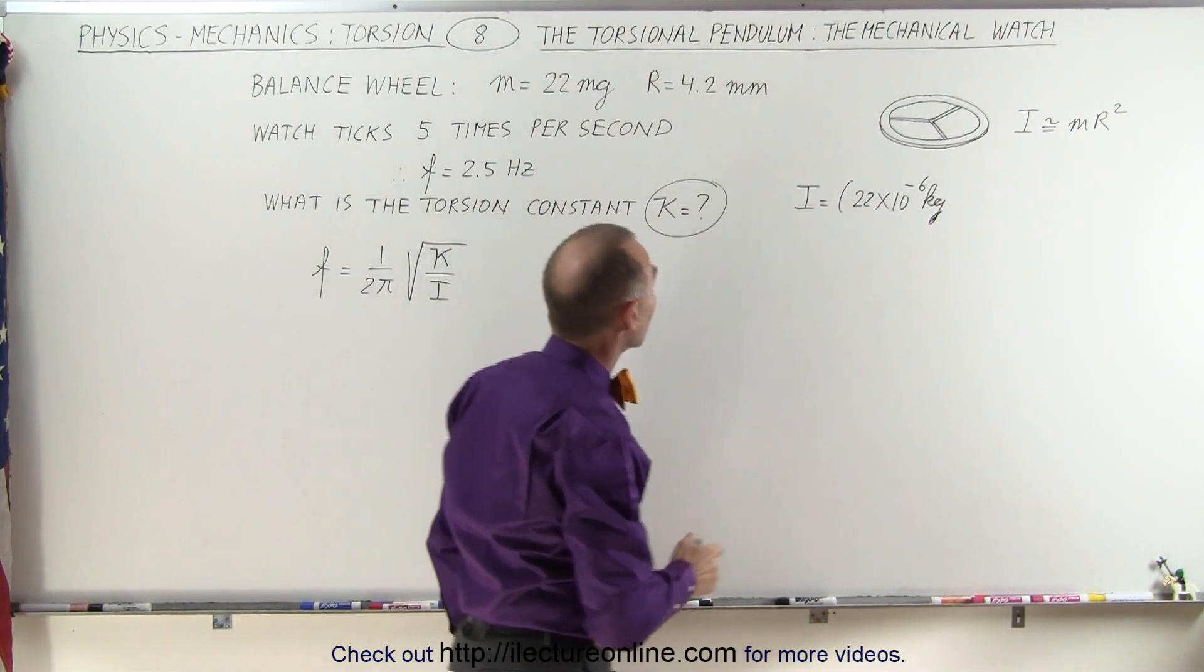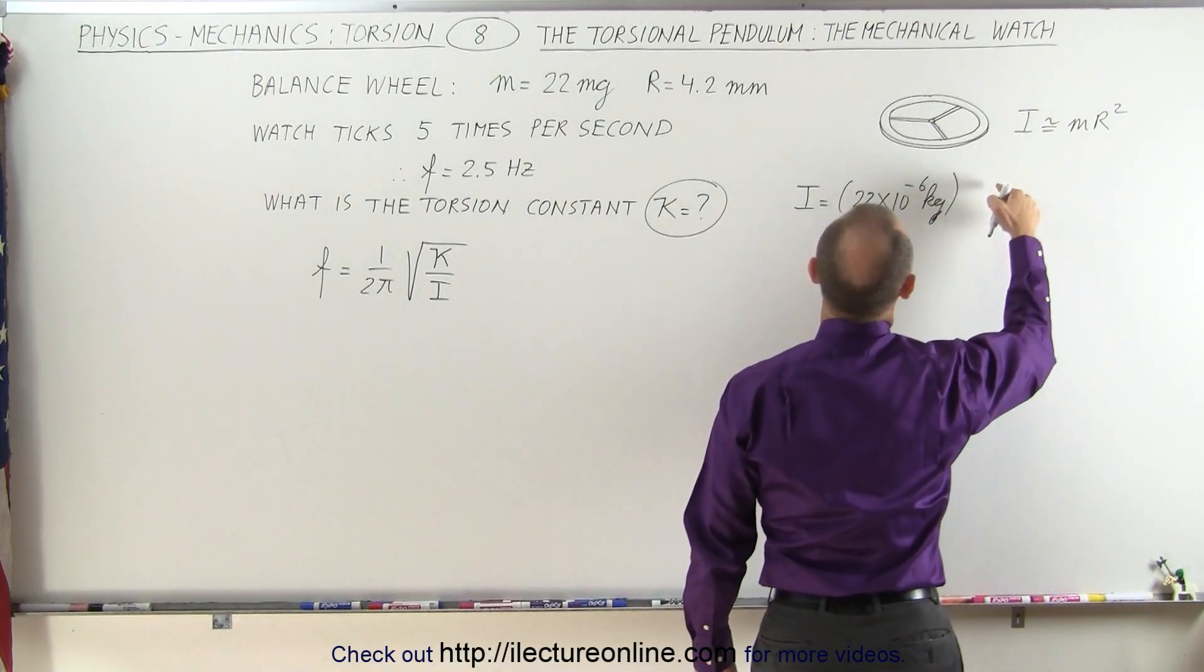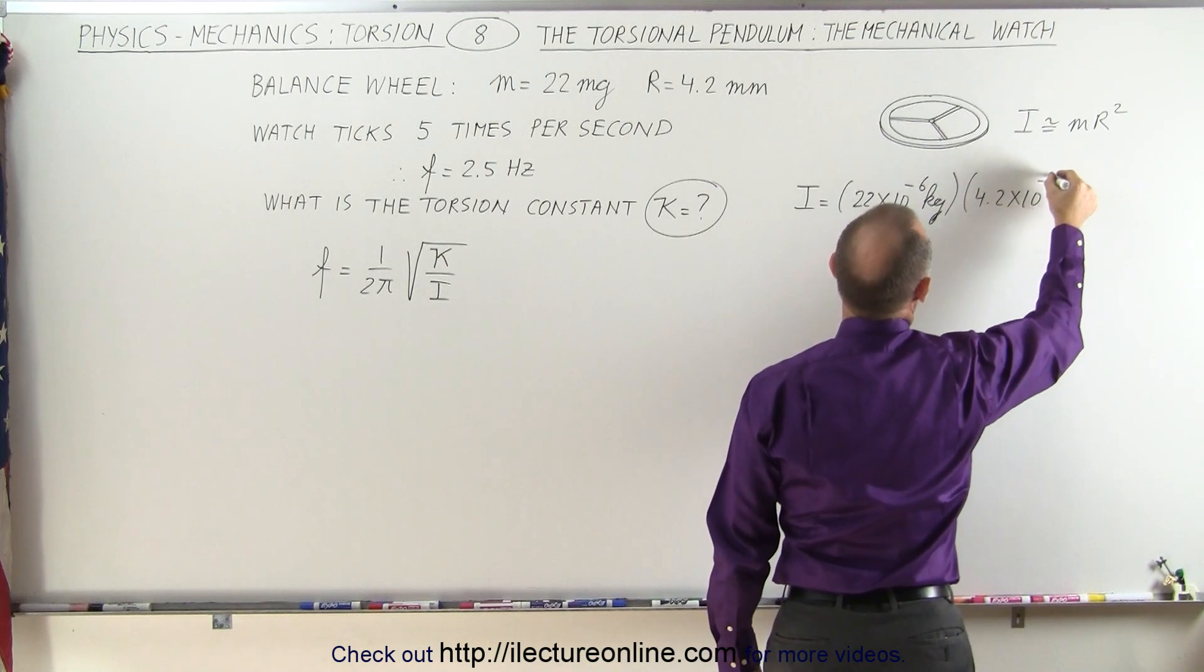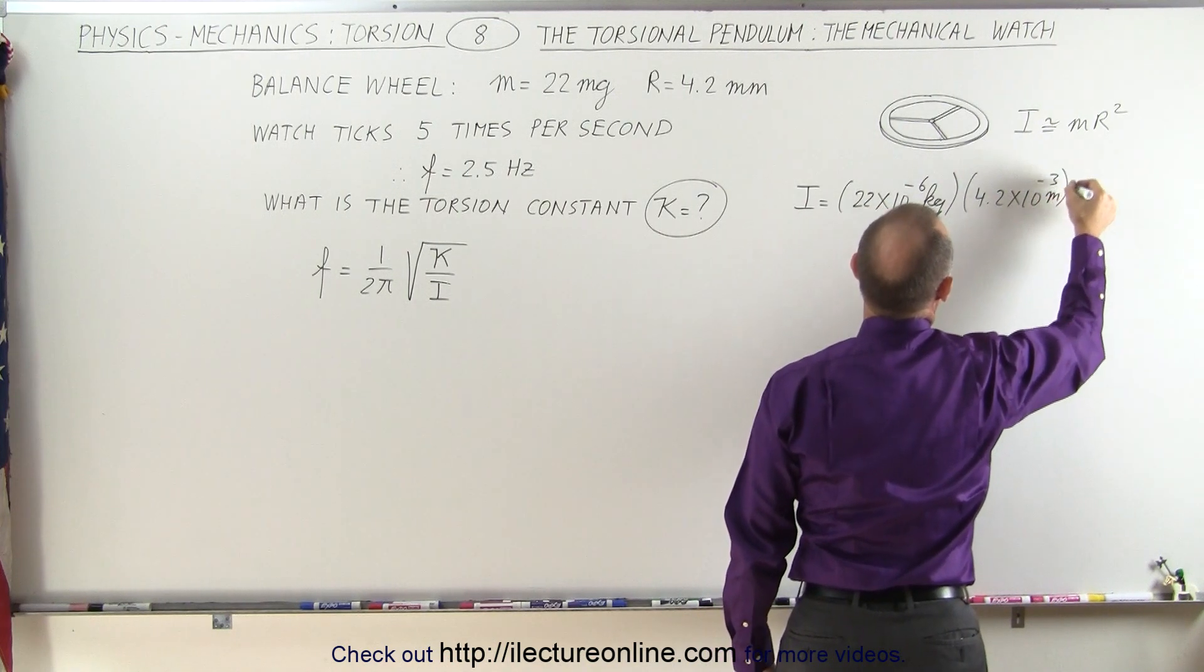And then we multiply that times the radius squared, which is 4.2 times 10 to the minus 3 meters squared. Well that's quite a small moment of inertia for that small balance wheel.